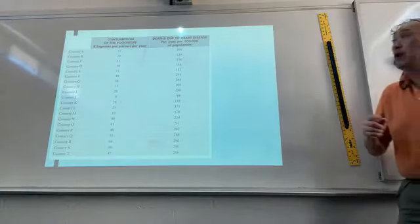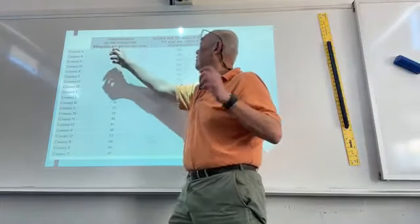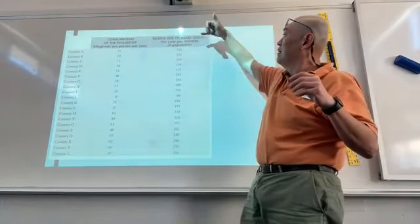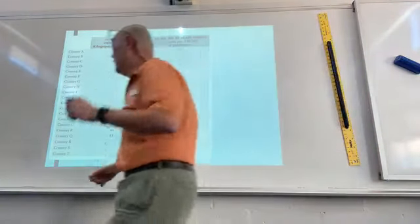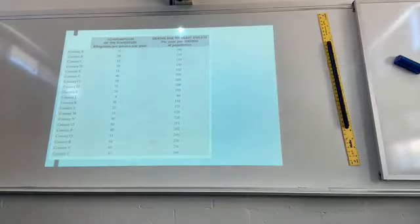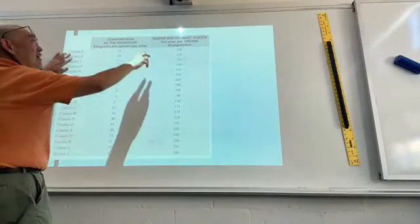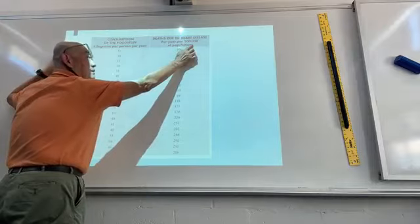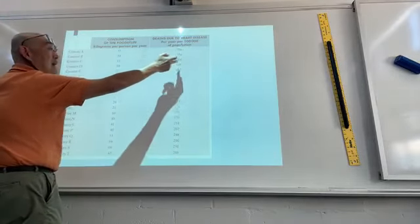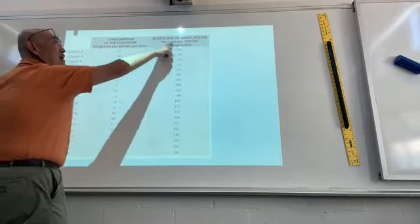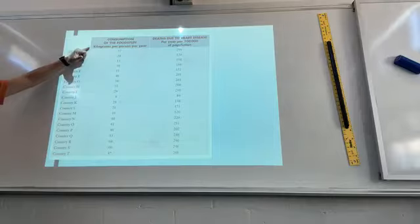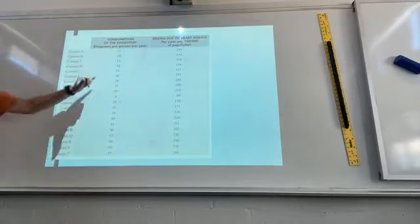Going back to situation one: consumption of foodstuff — note the units are kilograms per person per year — and death due to heart disease per year per hundred thousand population. When answering questions and doing an analysis, make sure you interpret things including the units. You can't just say the answer is 150; you need to say 150 deaths per hundred thousand population per year. If the consumption answer is 58, that's 58 kilograms. Make sure you know how to answer the question properly.